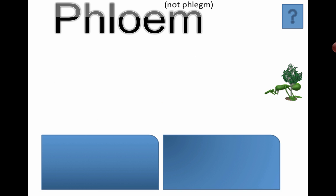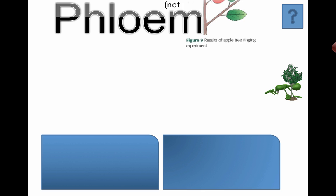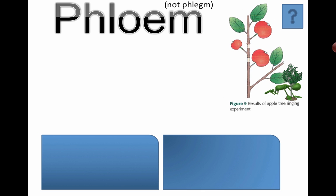Phloem — not phlegm — are special tubes that carry the products of photosynthesis around the plant to be stored. Xylem carries a lot of water, though there can be some nutrients transferred there too. But phloem is the primary type of tube that passes sugars and other products around the plant.